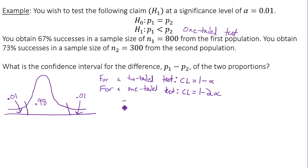So in this case, my confidence level is going to be 1 minus 2 times 0.01, which is 0.98. So make sure you take note of this one-tailed test. You have to subtract alpha twice from 1.